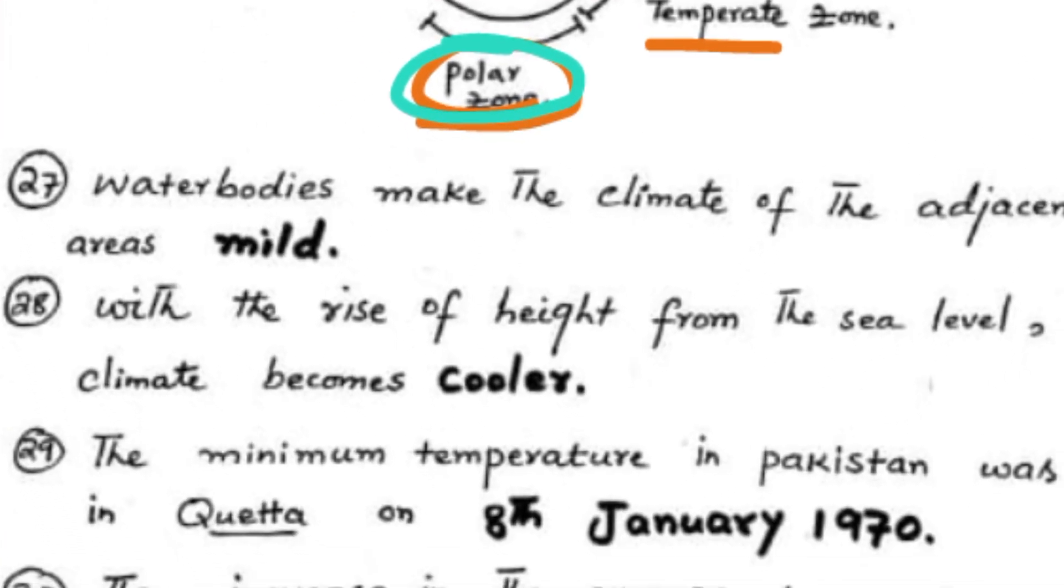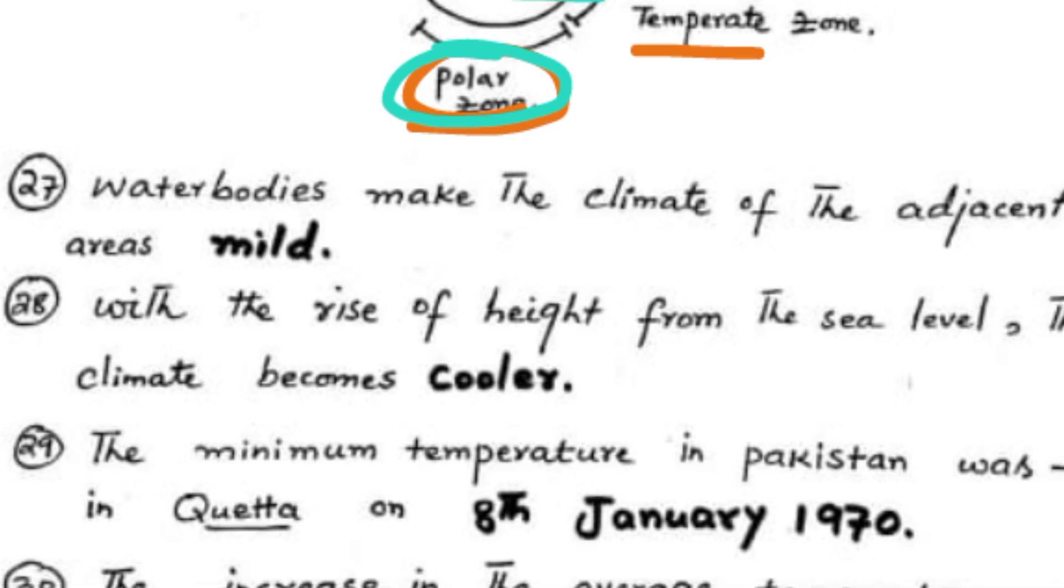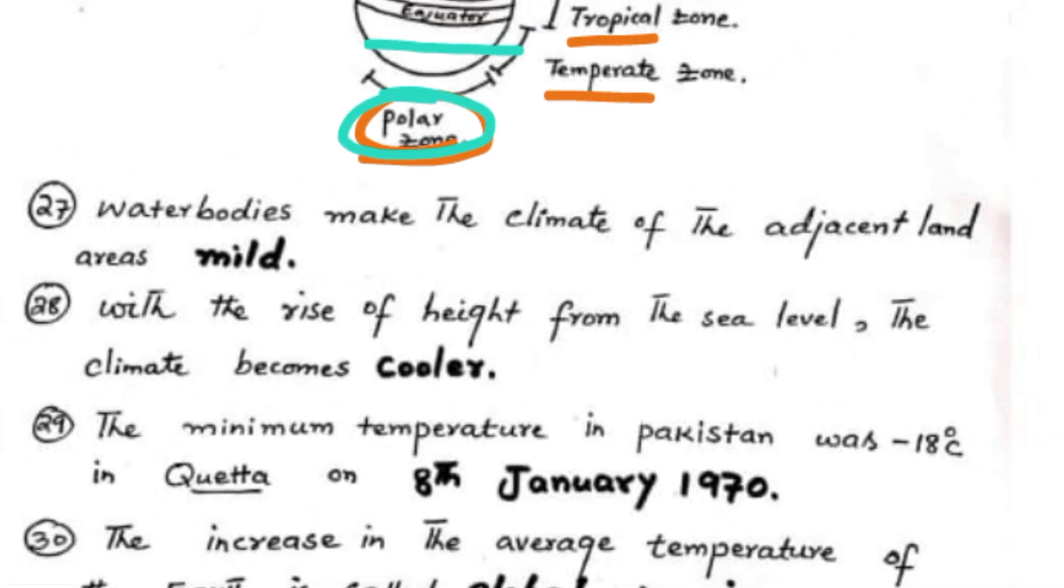Water bodies make the climate of the adjacent land areas mild. Areas near water have more moderate temperatures.